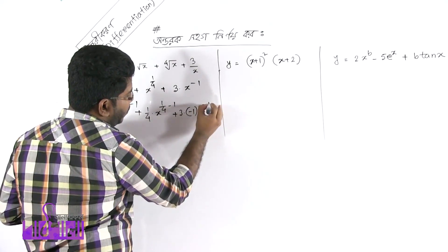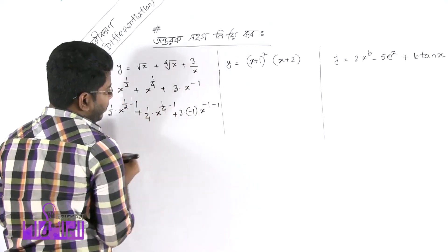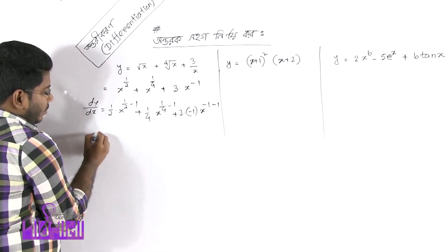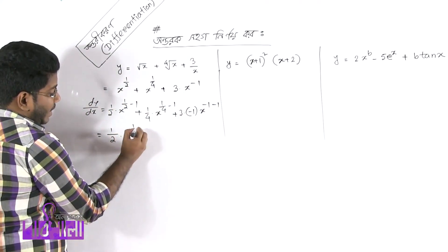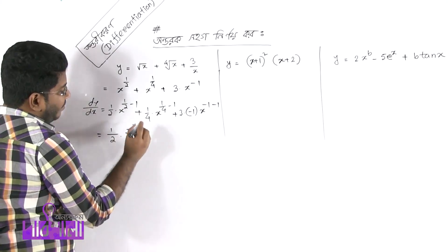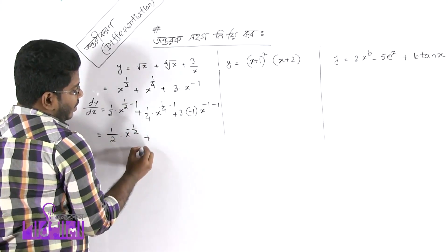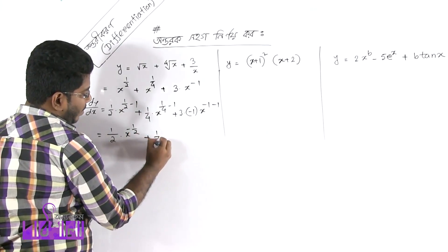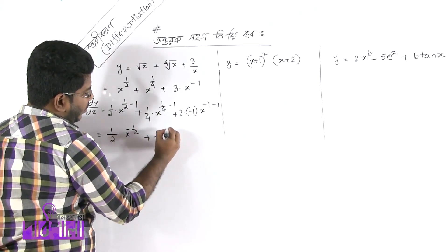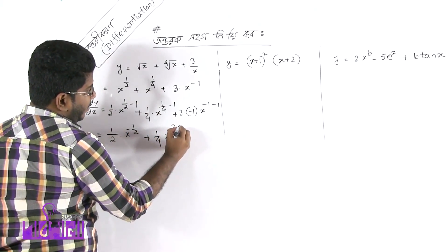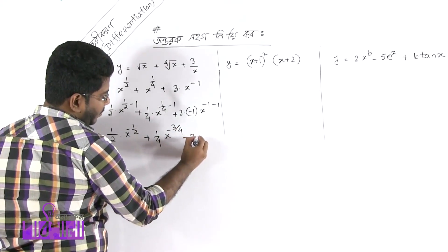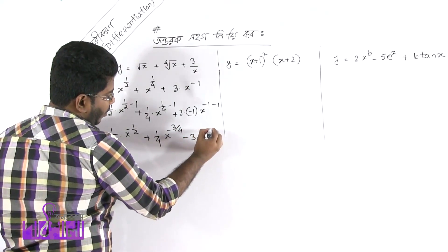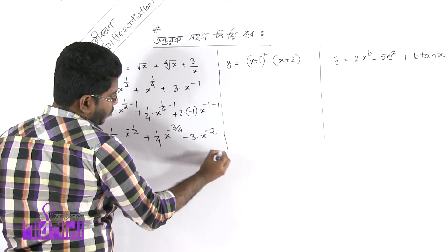x to the power minus 1 minus 1, half into x to the power minus half, plus 1 by 4 x to the power minus 3 by 4, minus 3 into x to the power minus 2.